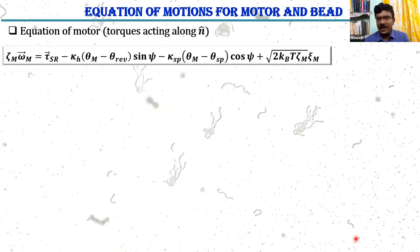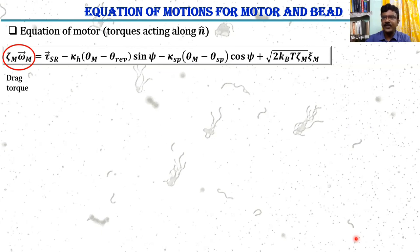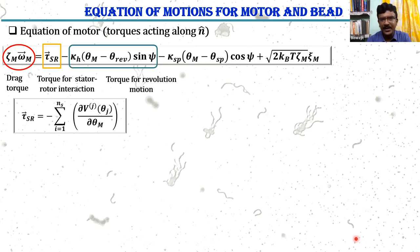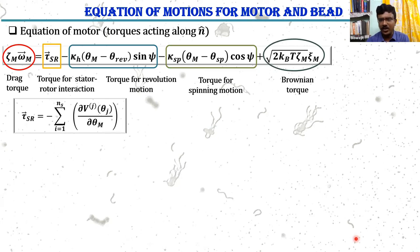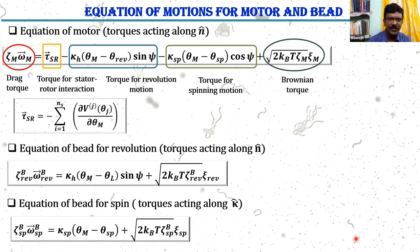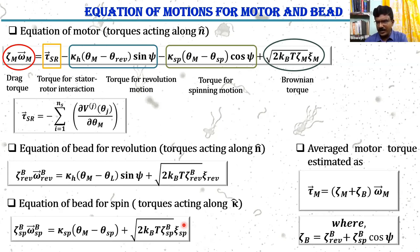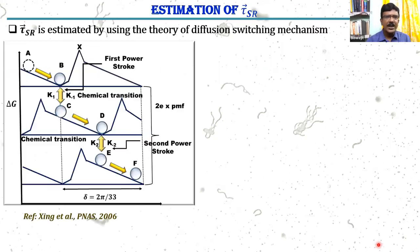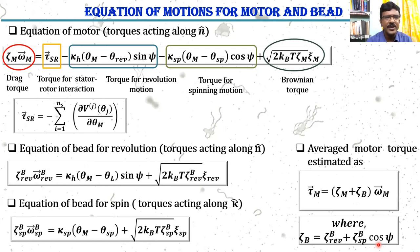We construct the equation of motion for the motor, considering all torques acting along the rotational axis: torque from the stator-rotor interaction, torque from revolution motion, spinning motion, and boundary torque. The equation for the bead in revolution motion and spinning motion is written accordingly. We calculate the average motor torque in a form similar to that used experimentally. However, in our case, when we consider both motions, the drag coefficient of the bead takes a modified form.